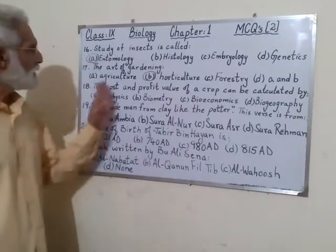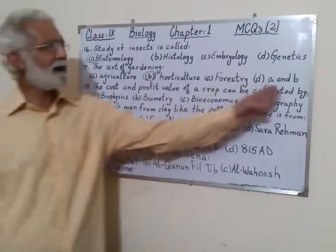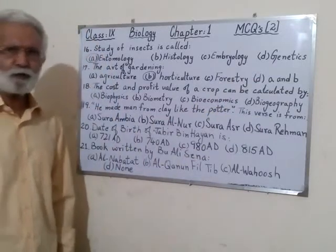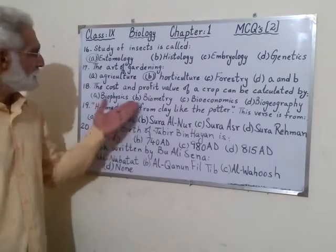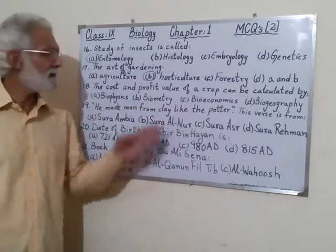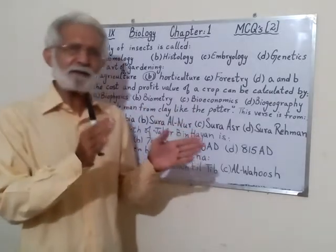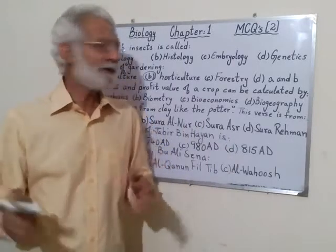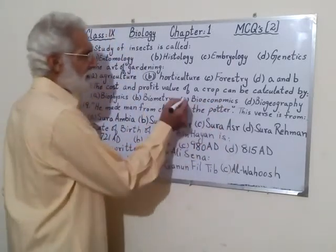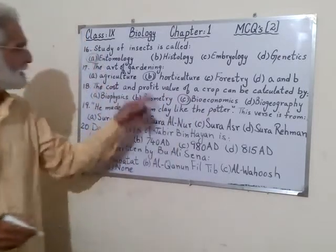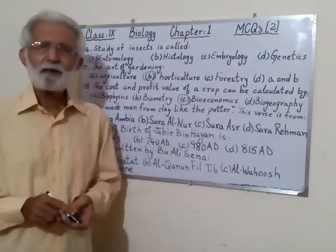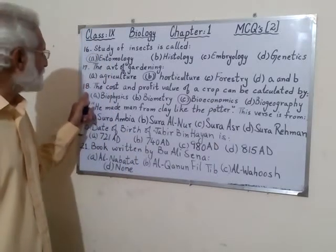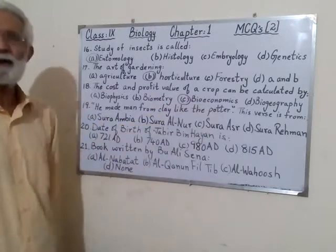Number 18: the cost and profit value of a crop can be calculated by which field? Biophysics deals with physics, not profit and loss. Biometry is something else. Bioeconomics — when we say economics, we find out the cost and profit of something. Biogeography is related to geography. So the correct answer for number 18 is choice C: bioeconomics.